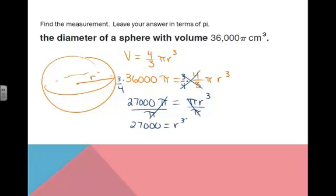And then we get 27,000 = r³. We can take the cubed root of both sides or simply ask ourselves, what number would we have to cube, multiply times itself 3 times, in order to get 27,000? And that number is 30. So if r = 30, then that means the diameter is 2 times 30 or 60 centimeters. And that's our final answer.